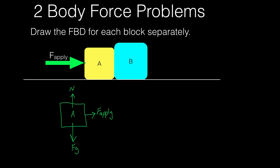When we push block A to the right, there's going to be another force caused between the ground and the block — that's called the force of friction. But there's also another force, and that's what we're going to learn in this video: there's a force between the blocks. When you push block A, there's going to be another force pushing to the left on block A, caused by block B. We call this the force of B on A, written as force sub-B of A, meaning the force that B is putting on block A.